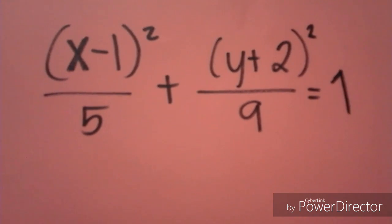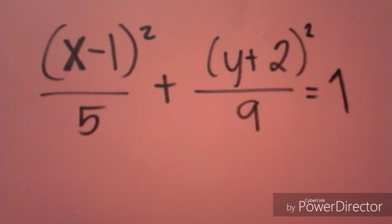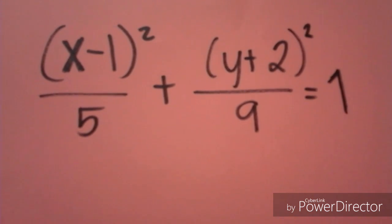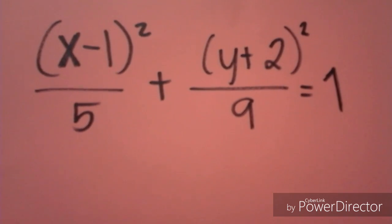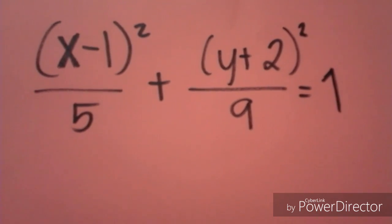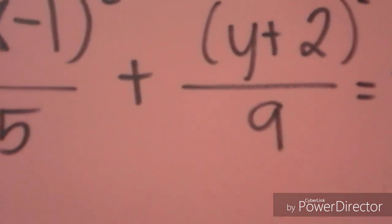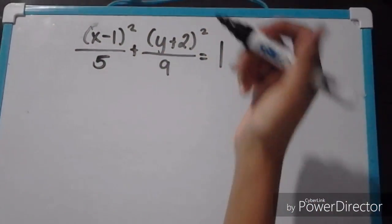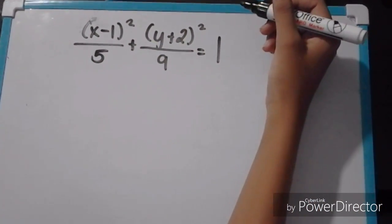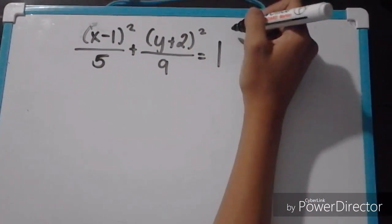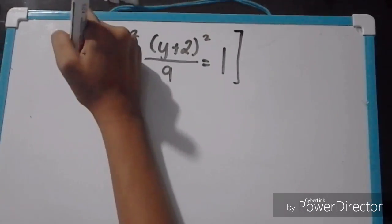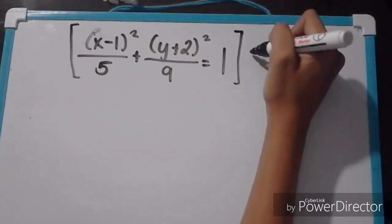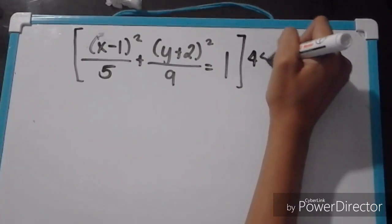Now we will change this equation — the quantity of x minus 1 squared over 5, plus the quantity of y plus 2 squared over 9, is equal to 1 — to its general form. To do that, we will first multiply its LCD, which is 45, to both sides of the equation.